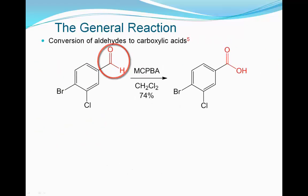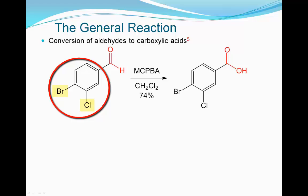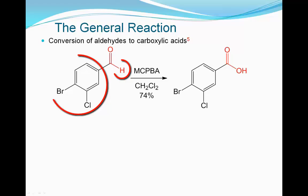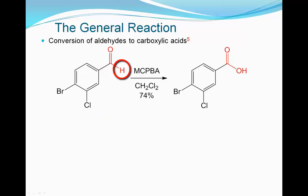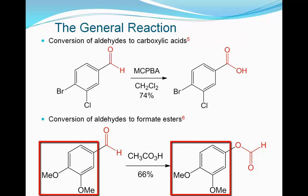An aldehyde may be oxidized to a carboxylic acid if and when the hydride ion preferentially migrates. In this case, the aryl group with the electronegative halogen substituents has a lower migratory aptitude. Remember, of the two groups attached to the carbonyl carbon, the more electron-rich group tends to migrate. In contrast, in the following reaction, the aldehyde is oxidized to a formate ester as a result of preferential migration of an aryl group.